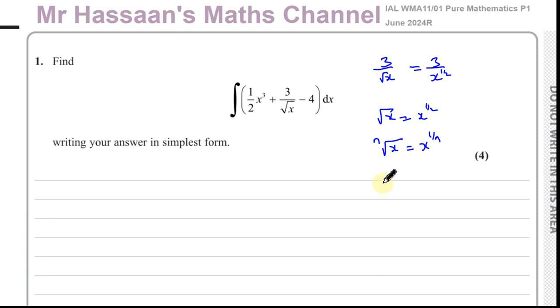And if you have, for example, the nth root of x to the power of m, then this will give you, this power is going to be the numerator, and the root is going to be the denominator. So that's in general how you can rewrite these things in index form, from surd form to index form.